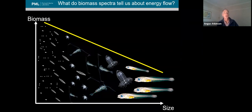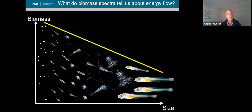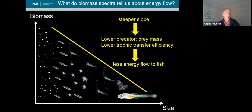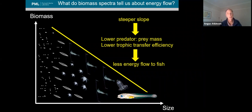A very simple background. The size spectra is based on the principle of attenuation of energy as you go up through the food web. There's a whole series of inefficiencies in trophic transfer at each trophic step, and inefficiencies in metabolism, which lead to an attenuation of biomass measurable as the slope of the size spectra. For example, if you steepen the slope of the size spectra, that reflects inefficiencies such as a lower predator-prey mass ratio or a lower trophic transfer efficiency, meaning less efficient energy flow to predators on the plankton — for example, the fish.